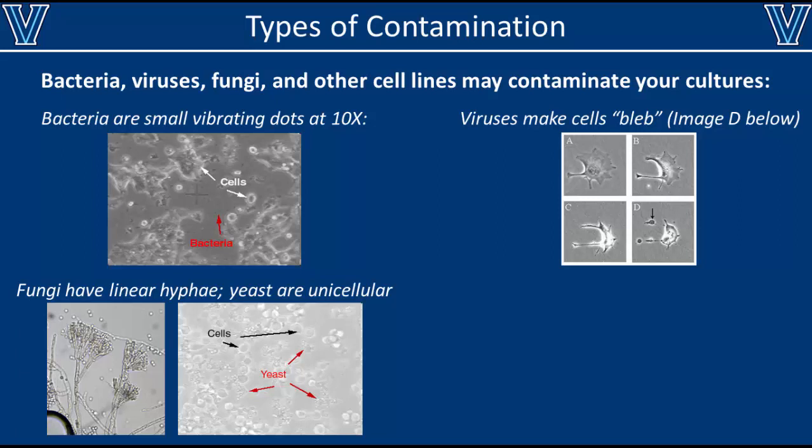Viruses are another common type of contaminant. They're especially hard to detect because they're extremely small and do not grow outside of the cell — instead they grow inside the cell and are naturally camouflaged. However, viral infection can change the morphology of your cells, and you may also notice that your cells grow at a much slower rate when infected with a virus.